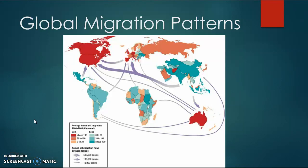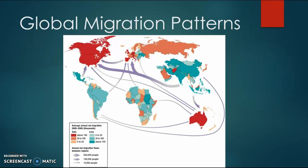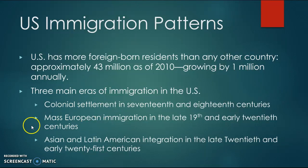This global migration patterns map is a great visual showing net in-migration flows to more developed countries such as Canada, the United States, and Europe. The thicker lines represent 500,000 people. You can also see the average annual net migration from 2000 to 2005, with the United States being above 100,000 annually.